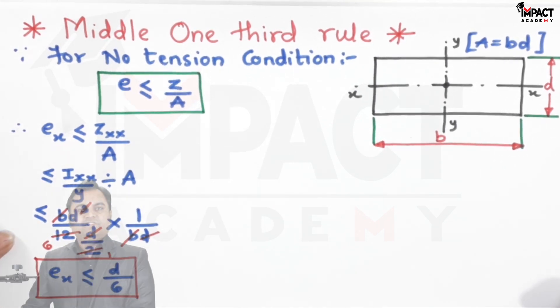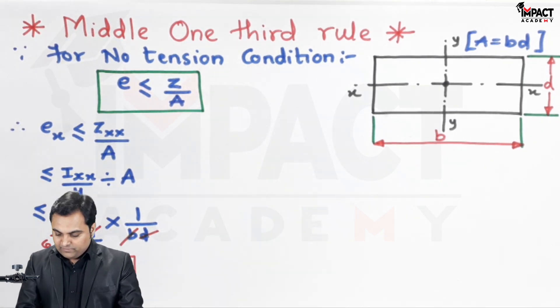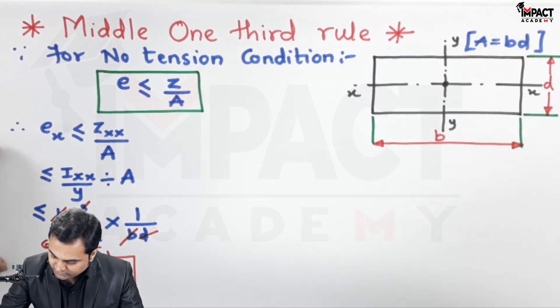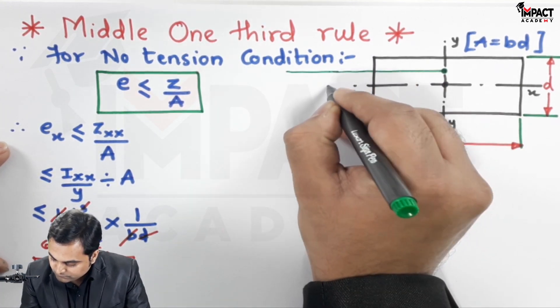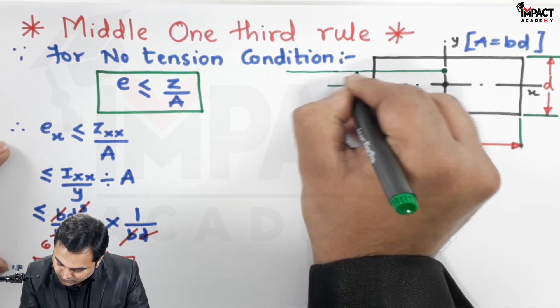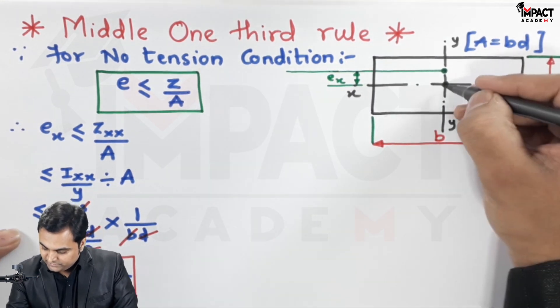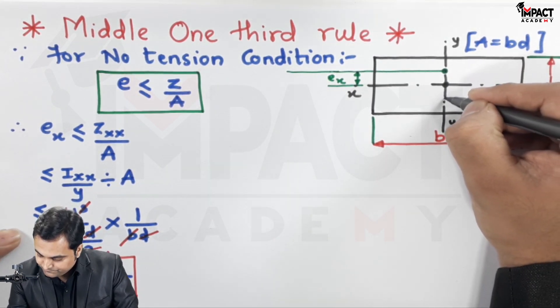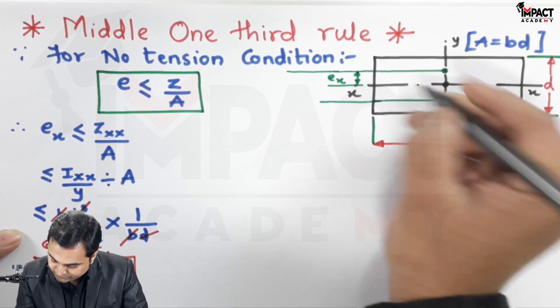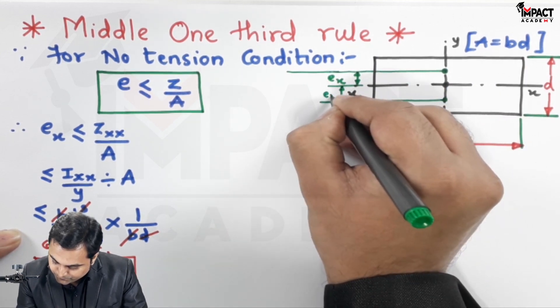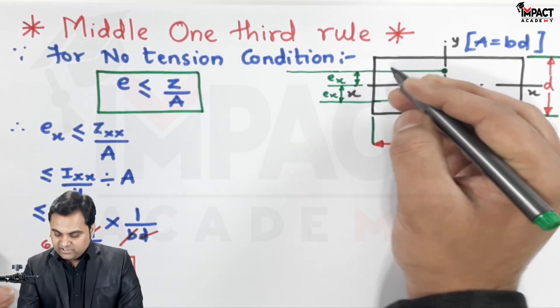Ex means eccentricity with respect to x-axis - we measure the distance from the x-axis. When we measure from the x-axis on one side, this distance is ex = d/6. Similarly, on the other side ex is d/6. Addition of them becomes d/3.